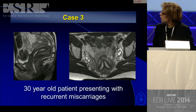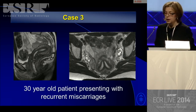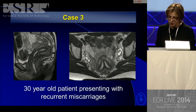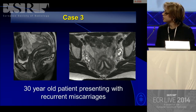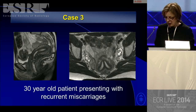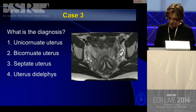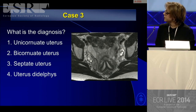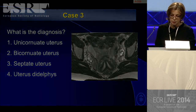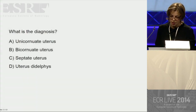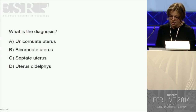Moving to the plane of imaging. We have a 30-year-old patient who presents with recurrent miscarriages. The question is: unicornuate uterus, bicornuate uterus, septate uterus, or uterus didelphys?